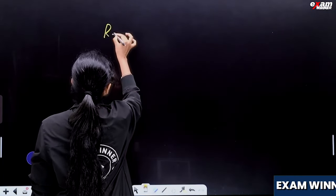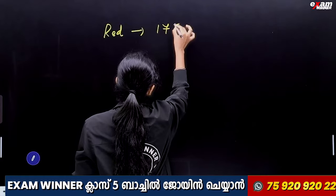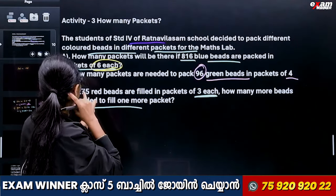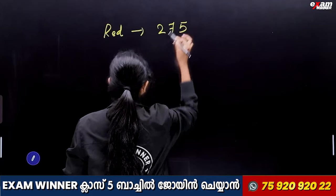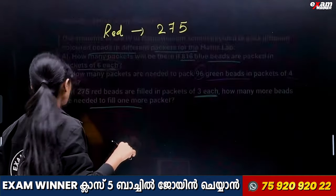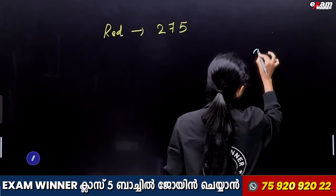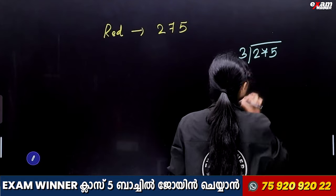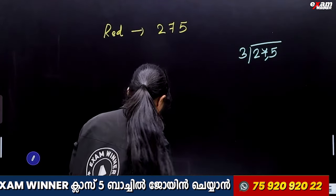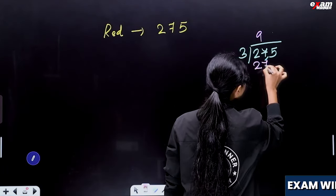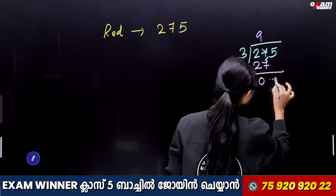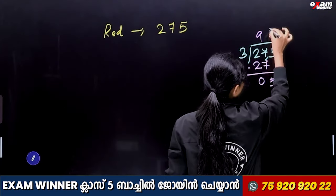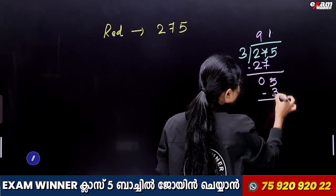It's very simple. We have 275 red beads. We divide by 3. 3 goes into 27 — 27 minus 27 is 0. Then bring down 5. 5 divided by 3 goes 1 time. 1 times 3 is 3. 5 minus 3 is 2. So the remainder is 2.